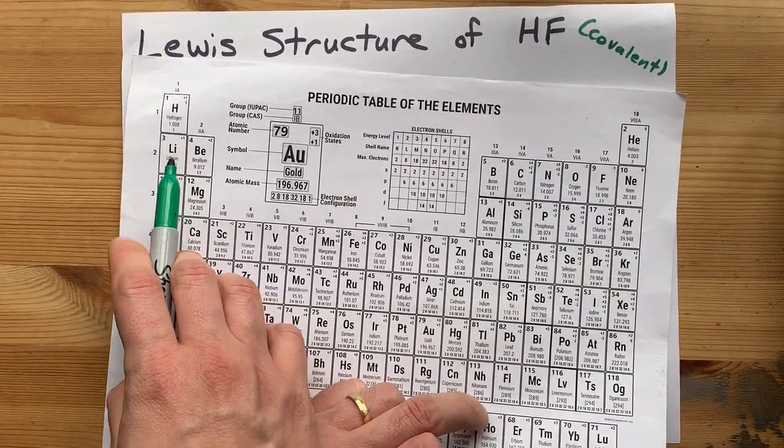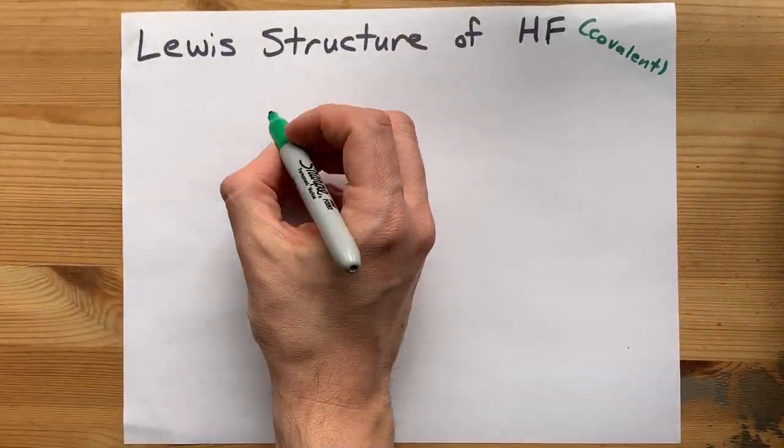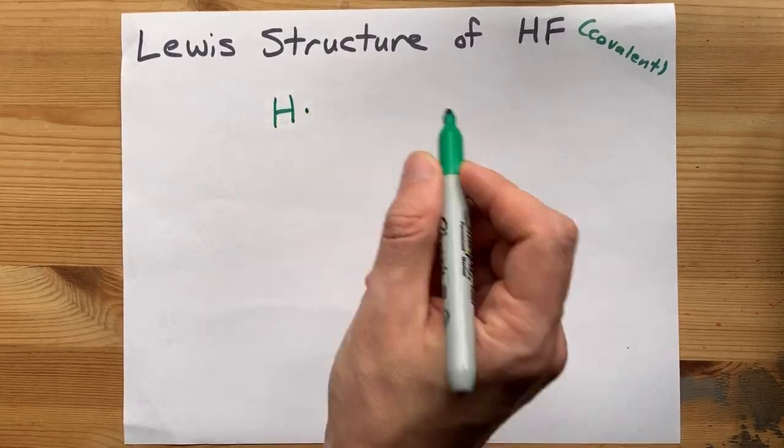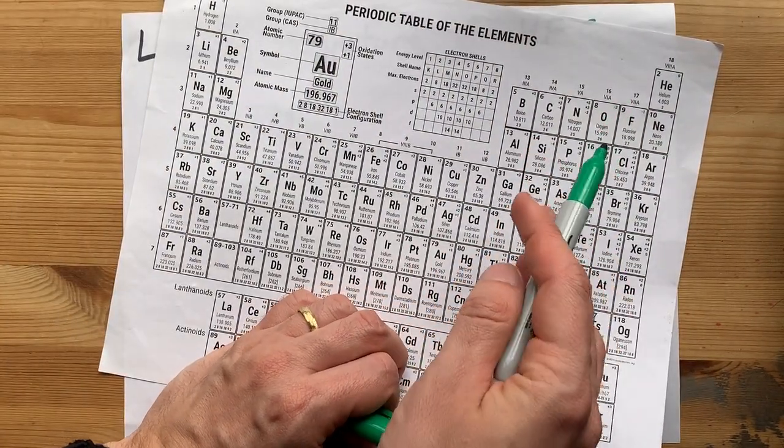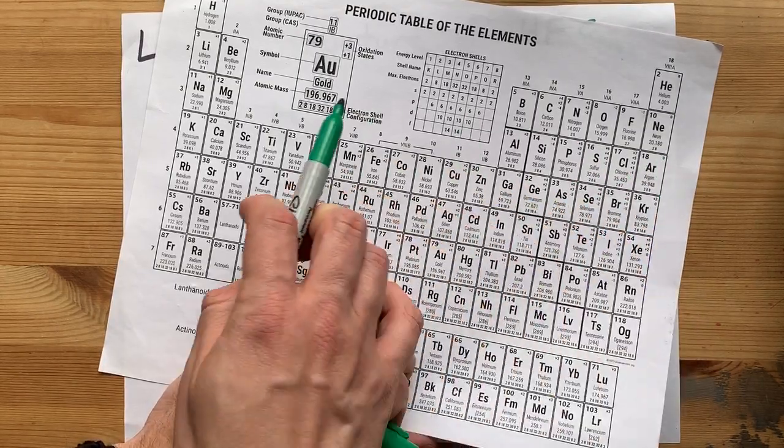Hydrogen is in the first column, so it brings one valence electron with it. Fluorine is in the 17th column, which brings seven electrons each.